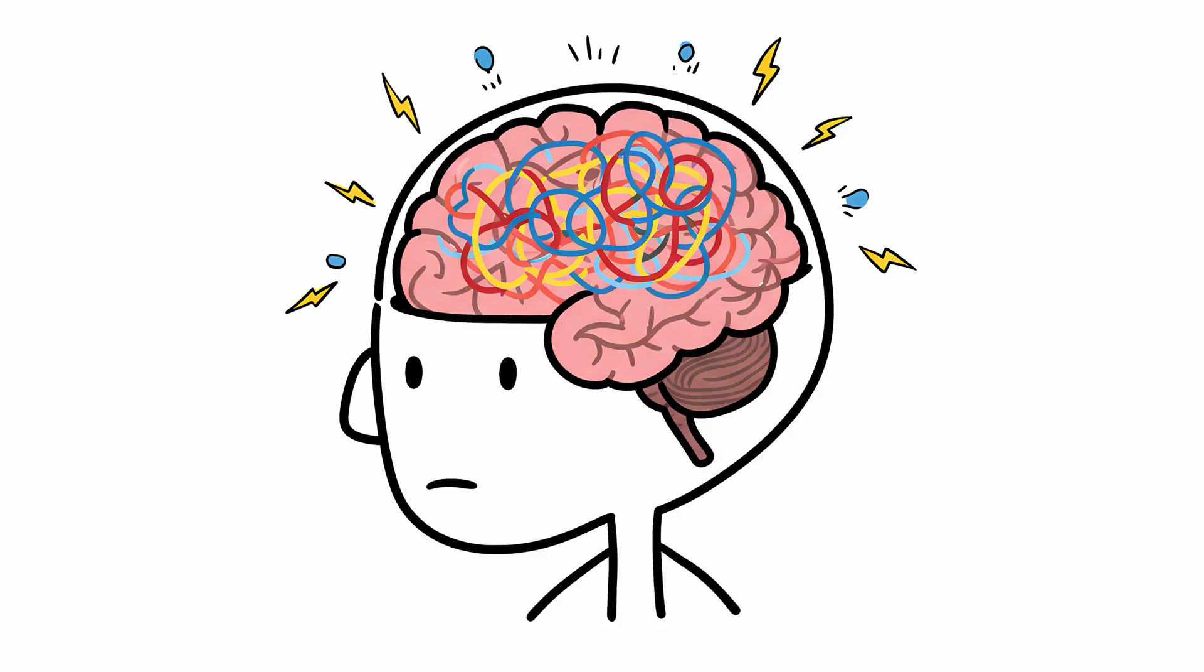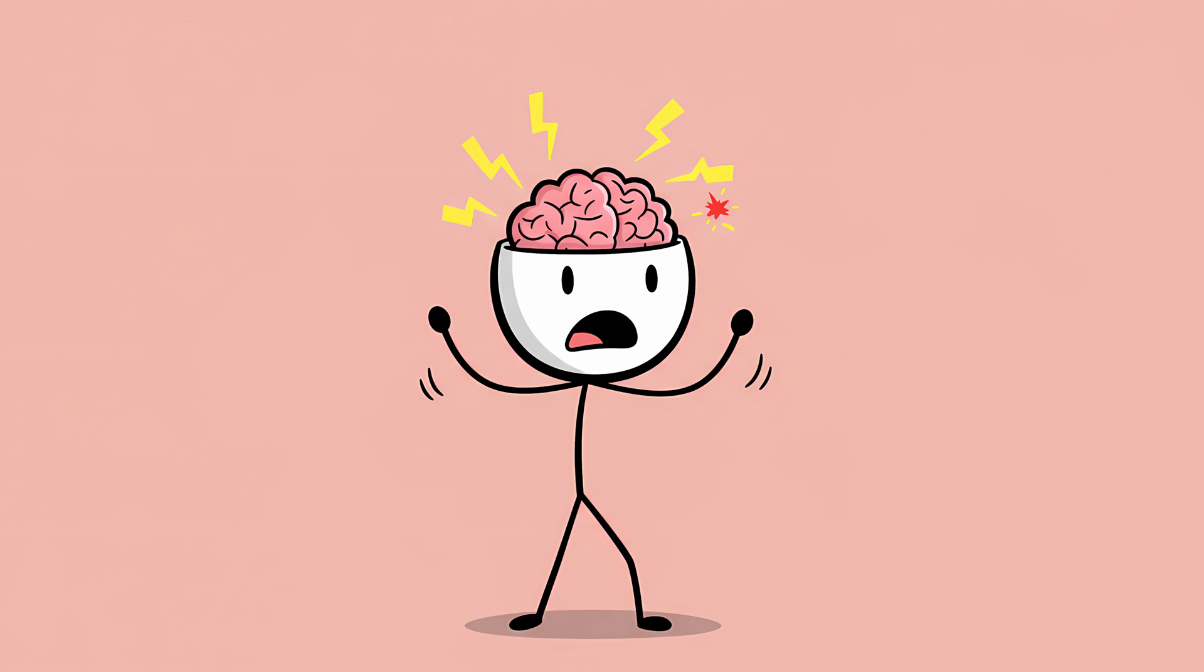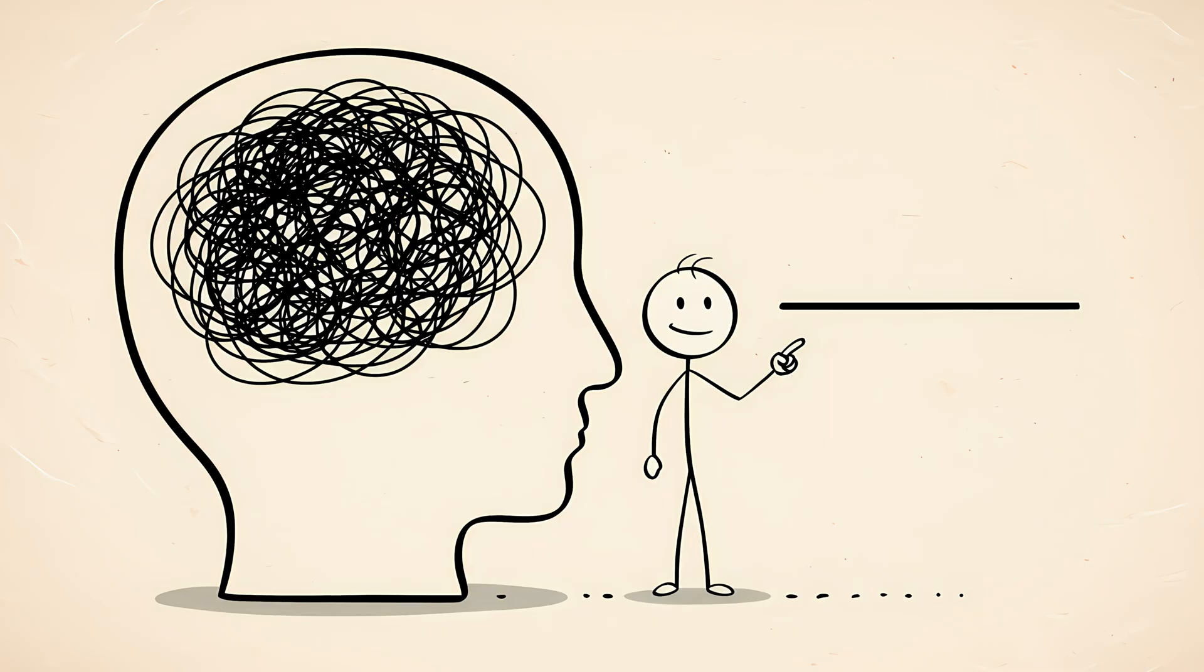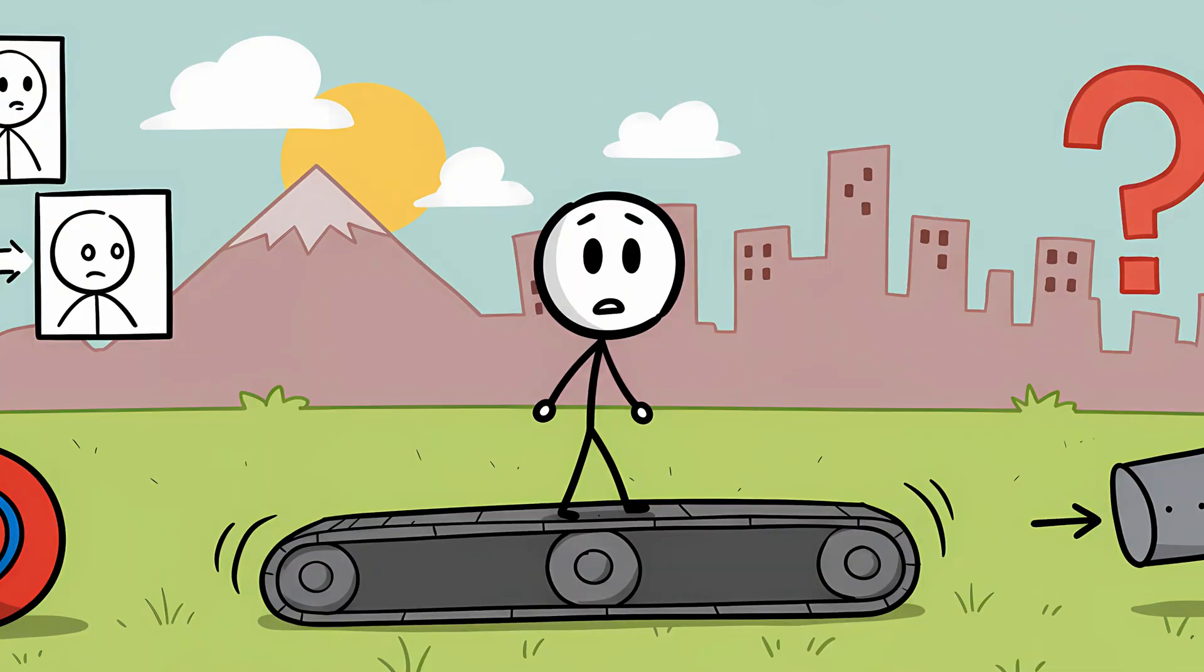Well, for one, a young brain is a brain in overdrive. It's still developing, forging new neural pathways at an incredible rate, and generally buzzing with activity. It's more excitable, and therefore more prone to the occasional misfire. But there's another, simpler reason. Young people are just having more new experiences.